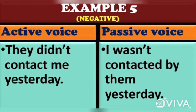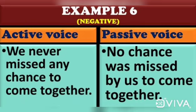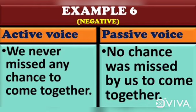Next example: 'We never missed any chance to come together.' Here, 'any chance' is the object. Because it is a negative sentence, 'any chance' is changed to 'no chance.' The passive form becomes: 'No chance was missed by us to come together.'